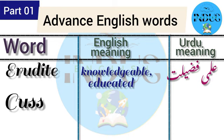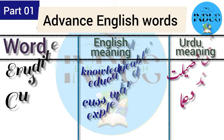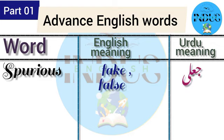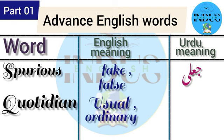'Crass' means cuss word or expletive. In Urdu, it means baddu'ah. 'Spurious' means fake or false in English, and in Urdu it means jali. 'Quotidian' means usual or ordinary. In Urdu, it means yomiya.